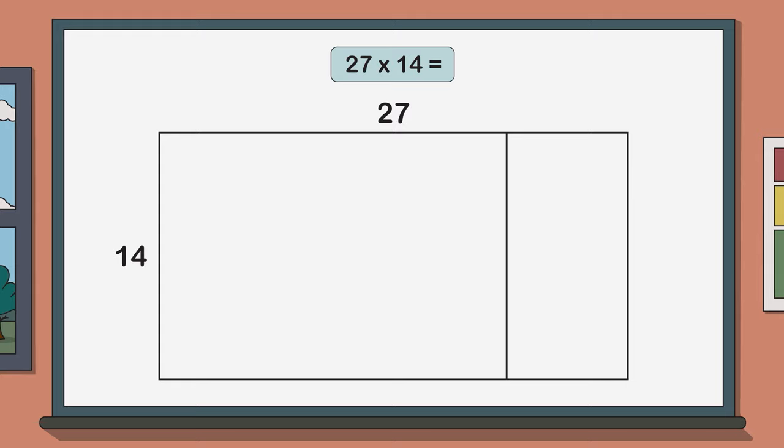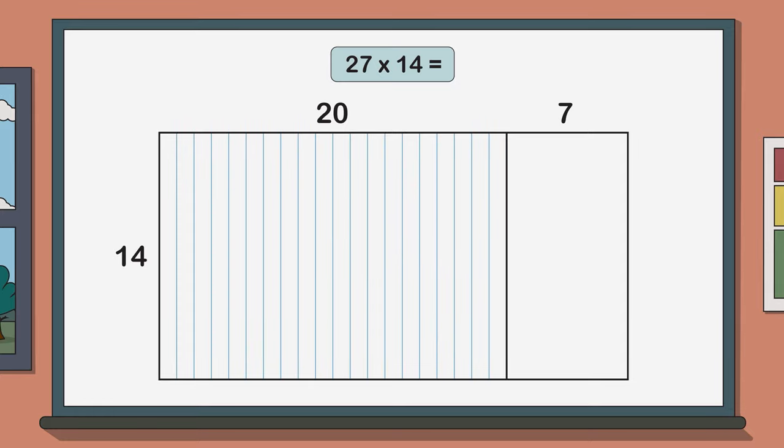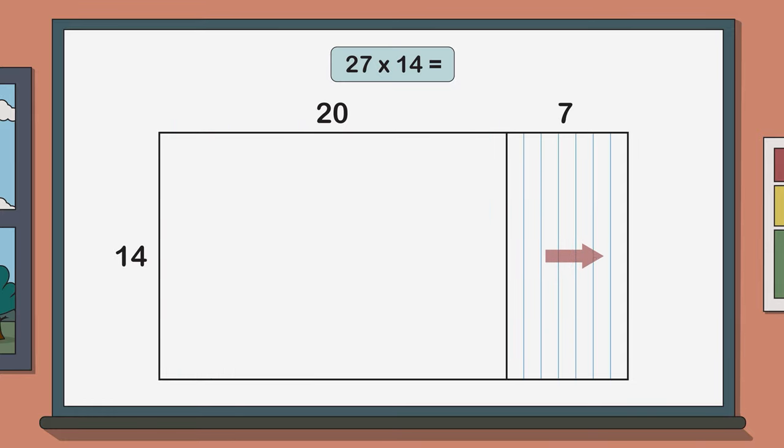What we have done here is split our 27 into 20 and 7 so that this side of our line represents 20 equal columns and this side represents 7 equal columns. Make sure to write 20 and 7 above each of these sections.